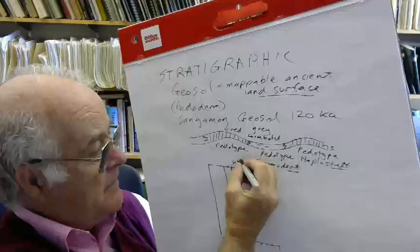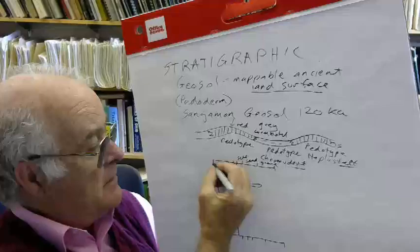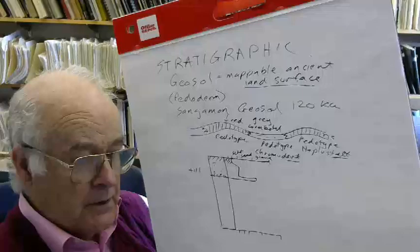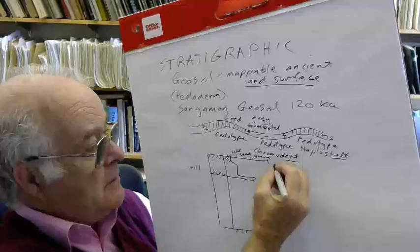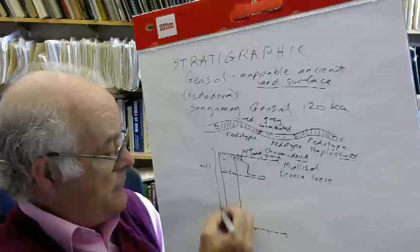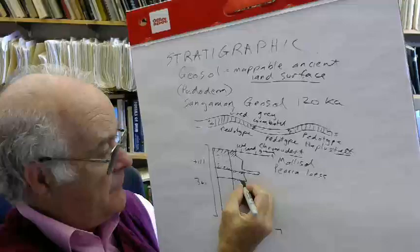Perhaps the most widespread use of soils has actually been in stratigraphic studies. In stratigraphic studies, soils have been used very widely for Quaternary age rocks, dividing up Quaternary age rocks. The rocks of the Quaternary are loess and sand and till. And frankly, one sand and loess and till looks pretty similar to the other.